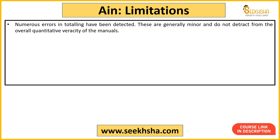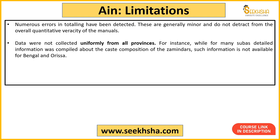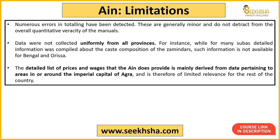There are some limitations of Ain-i-Akbari highlighted in NCRT. First, there are minor totaling errors, though these do not have a major effect. Second, data was not collected uniformly from all provinces — some subas have detailed information on caste composition and zamindars, but provinces like Bengal and Odisha lack detailed data. Third, prices and wages — which affect common people most — are mentioned only for the area in and around Agra; detailed information on prices and wages for the rest of the kingdom is not available. These are the limitations historians have highlighted.